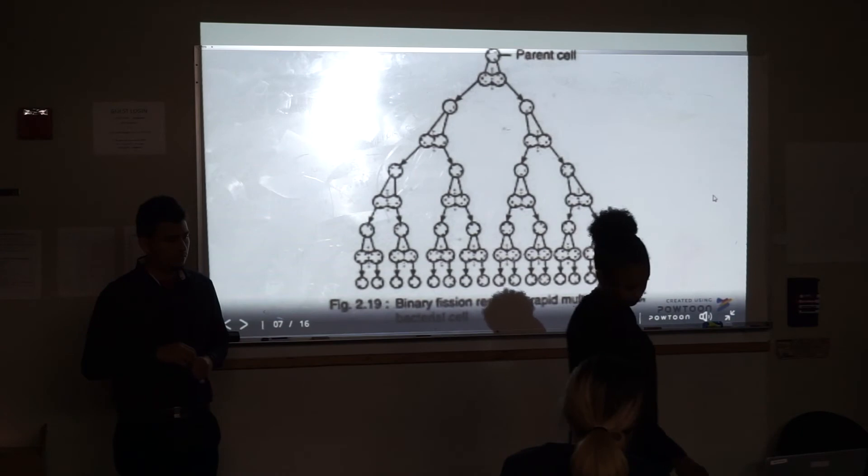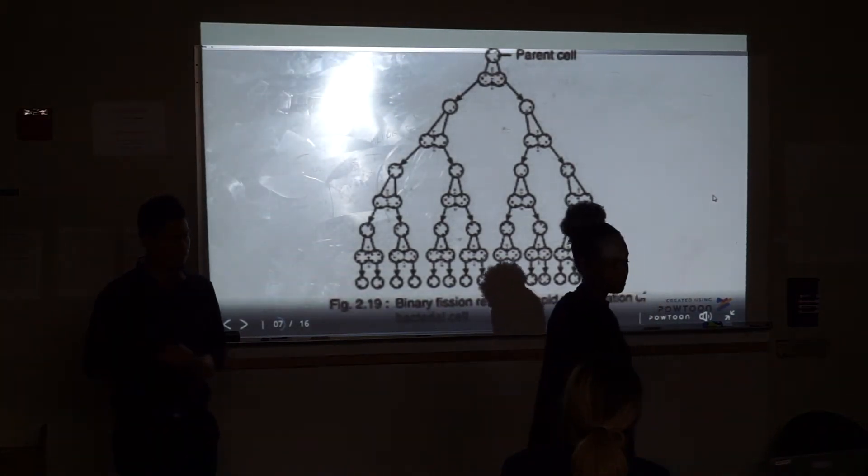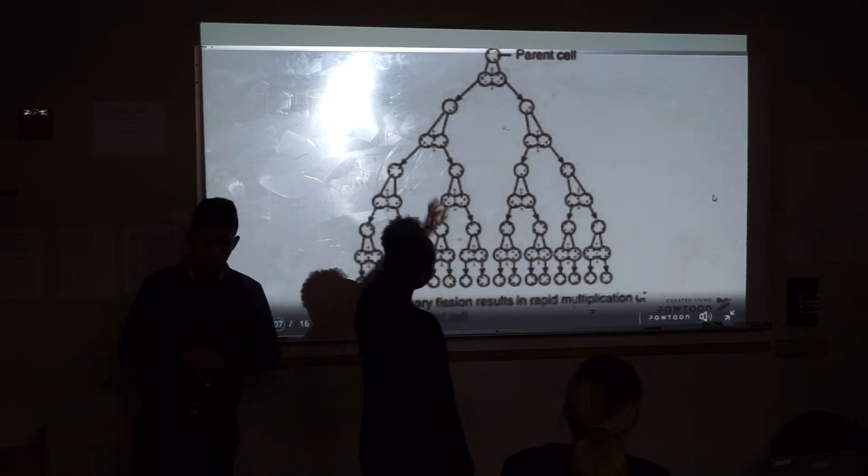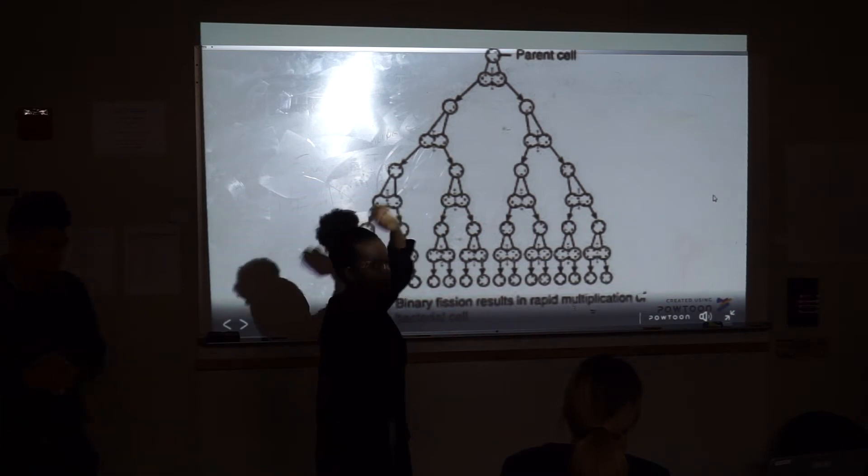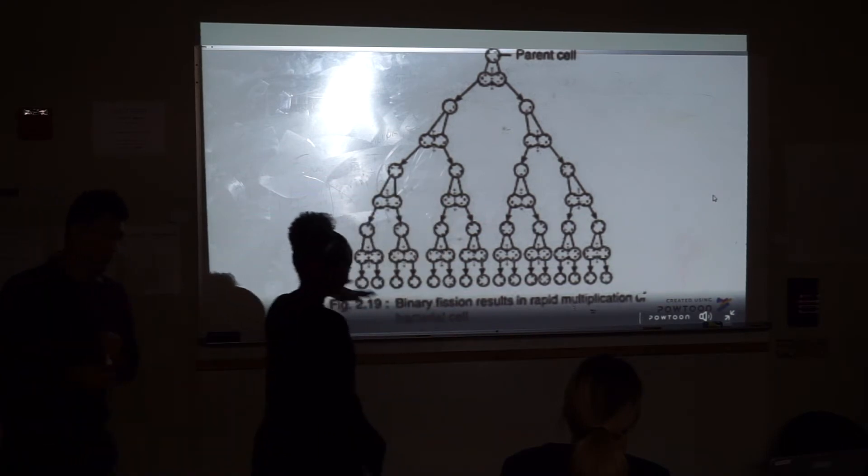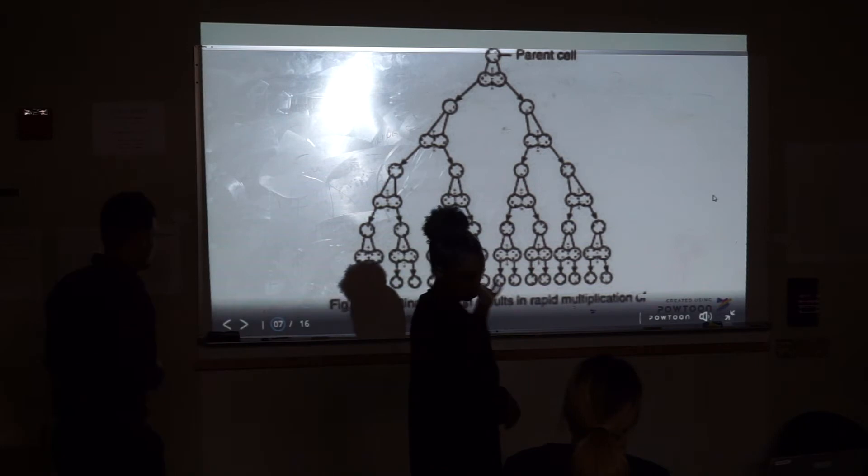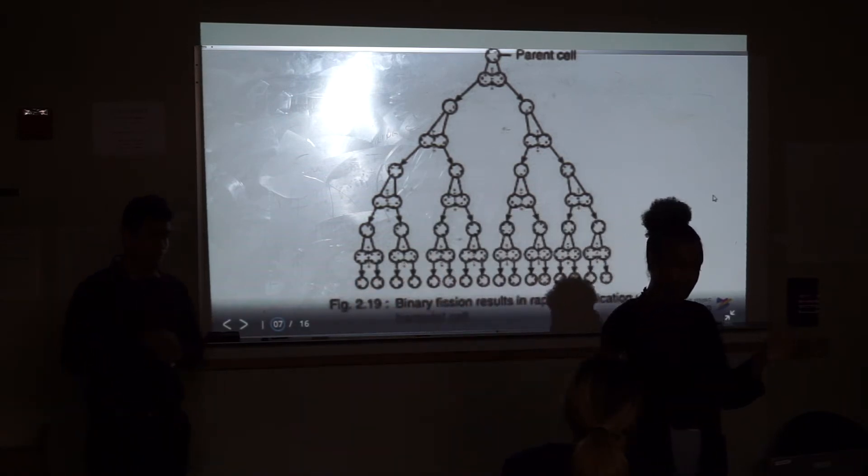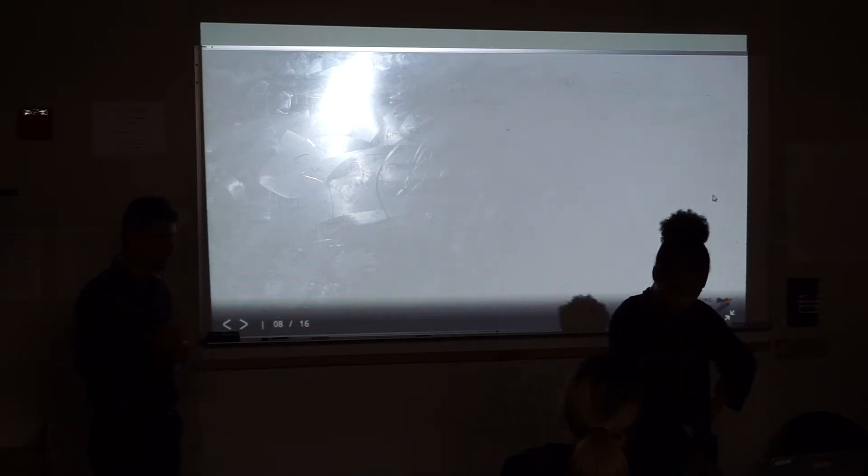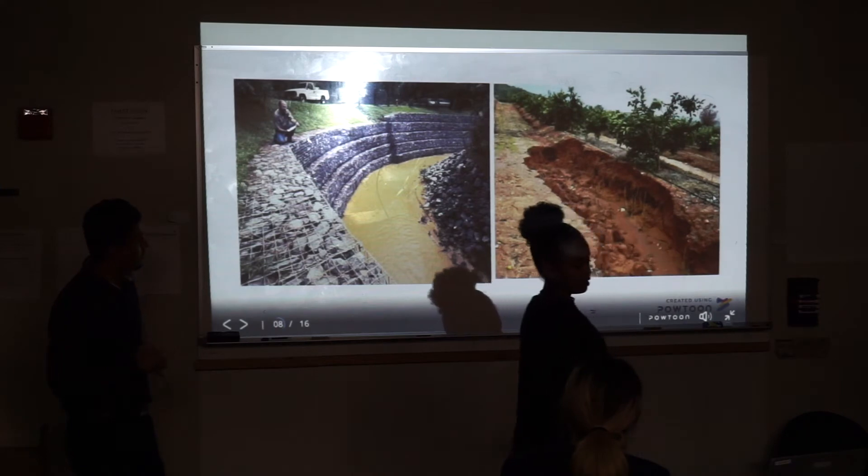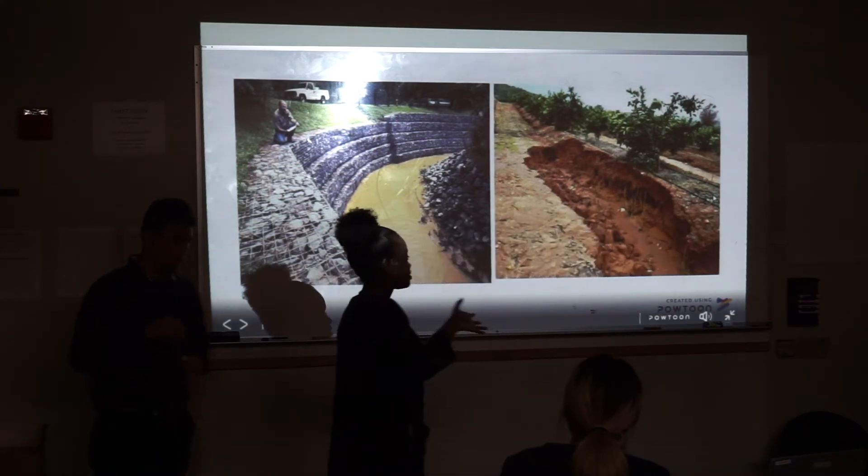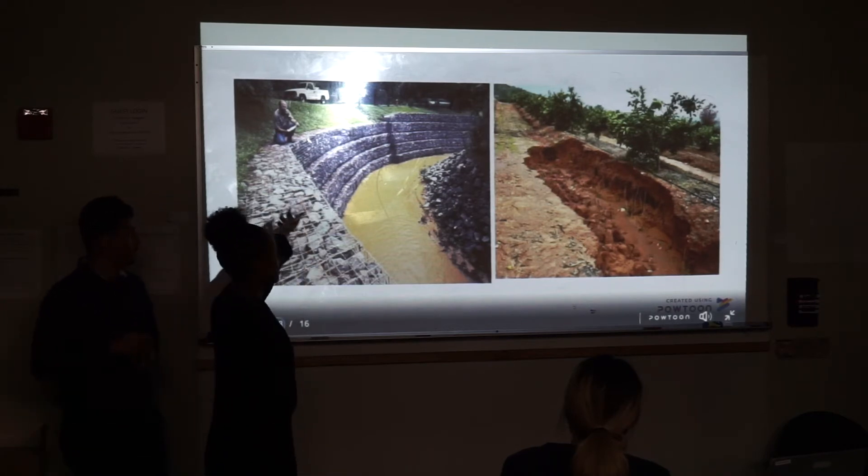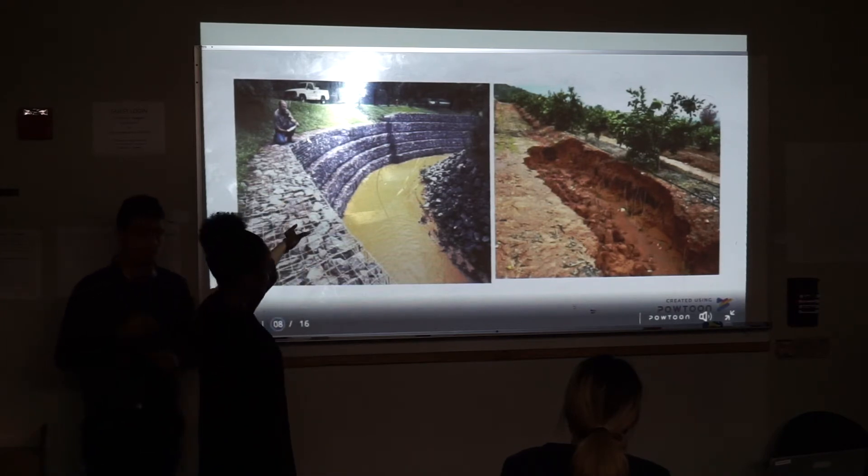The next one is how bacteria are replicate or reproduced by the binary fission. So starting from the main root or the parent cell, it's like branching itself and replicating itself. So this shows how nature is, fractals are repetitive or endless and regular. And the other example is protecting the soil erosion. When you see this, people are using the same structure of fractals with the repetition to protect the soil erosion.